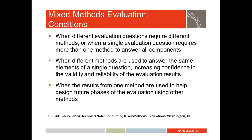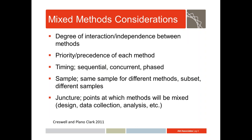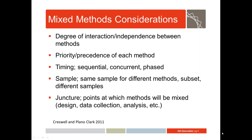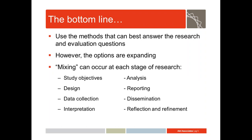Some things to think about when you're using mixed methods include the degree of interaction or independence between your qualitative and quantitative methods and data, the priority or precedence of each method, the timing and sequence of your methods — whether they're going to be concurrent or phased — your sample, whether you're drawing from the same sample for different methods or different samples, and the juncture, the point at which you're going to mix your methods. The bottom line is that you want to use the methods that can best answer the research and evaluation question.